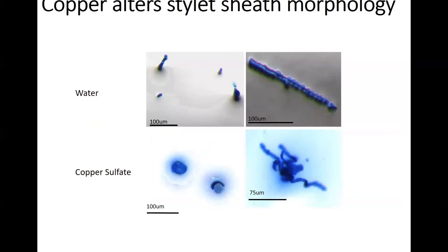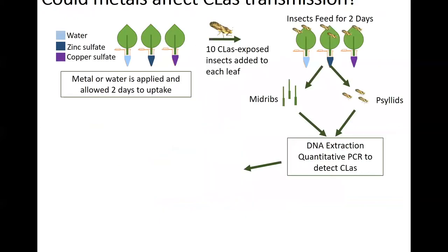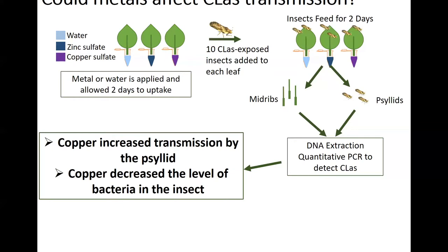I wanted to know the big question: could copper presence actually impact CLAS transmission? I did an experiment where I took citrus leaves and soaked them with either water, zinc sulfate, or copper sulfate. Then I allowed 10 CLAS-infected insects to feed on the leaves to inoculate the bacteria for two days. I then took the mid-ribs — the middle vein of each leaf — and the psyllids feeding on it, extracted the DNA, and did qPCR to quantify the amount of CLAS present in that sample. What I found was that copper increased the transmission of CLAS by the psyllid. Interestingly, the highest level of copper was actually able to decrease the level of bacteria in the insect.